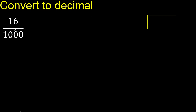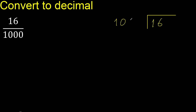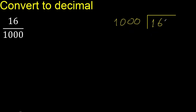16 divided by 1000. 16 is less than 1000, therefore complete with 0 — write 0 point, always complete with 0.